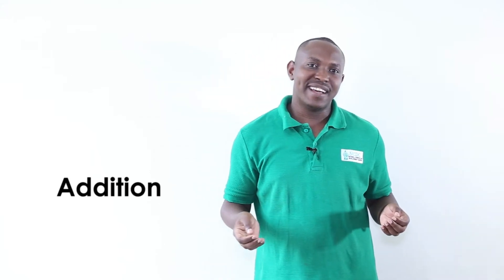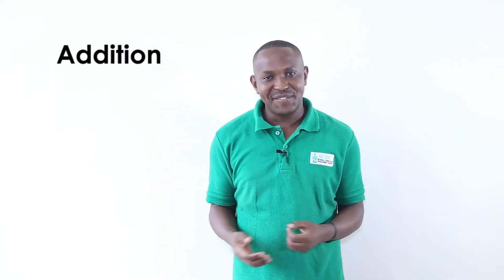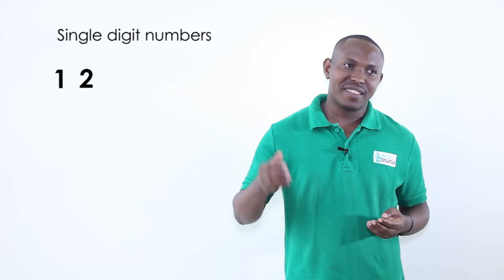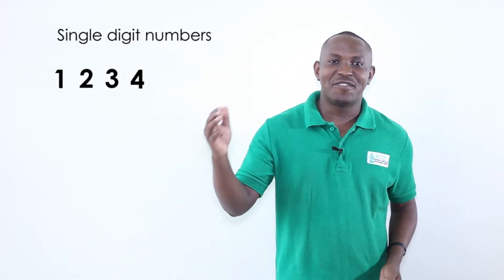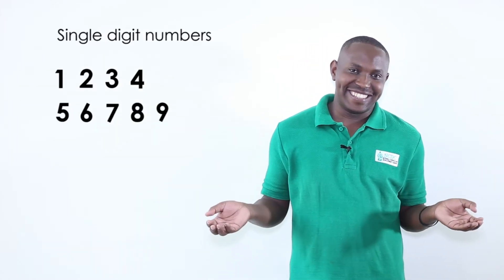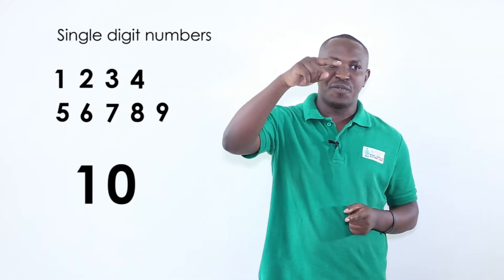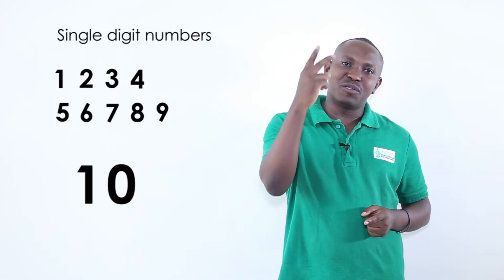We are going to share addition of single-digit numbers. Single-digit numbers: 1, 2, 3, 4, 5, 6, 7, 8, and 9. Pay attention. Why have I not included 10? 10 is written as 1, 0. So these are two digits, not a single digit.